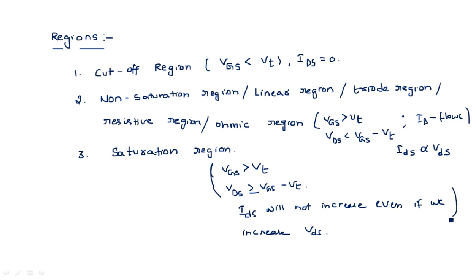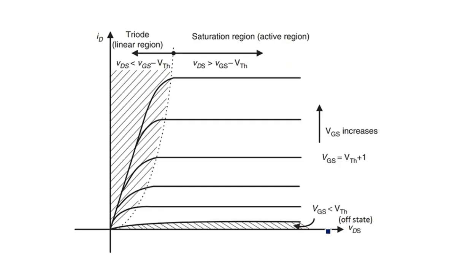Let us see these three regions diagrammatically with respect to the IV characteristics. VDS is taken on the x-axis and IDS is taken on the y-axis. Initially, when VGS is less than VTH, the transistor is in the off state and there is no flow of current, so IDS equals zero. When VGS is increased beyond VTH and VDS is less than VGS minus VT, the transistor is in the non-saturation region.